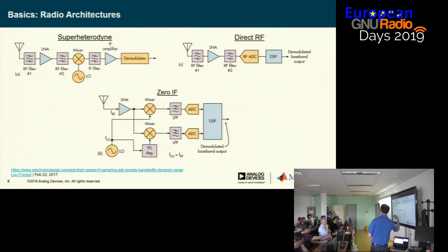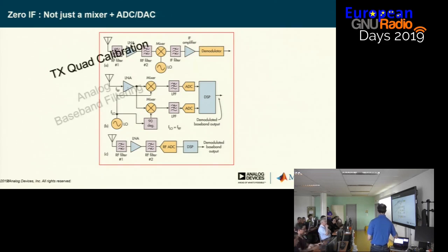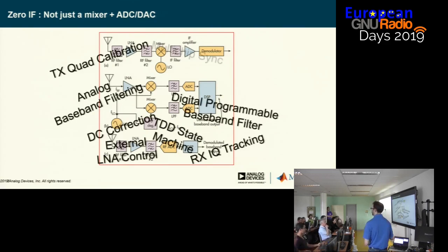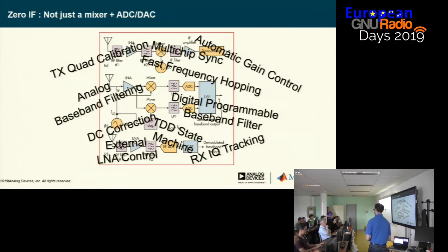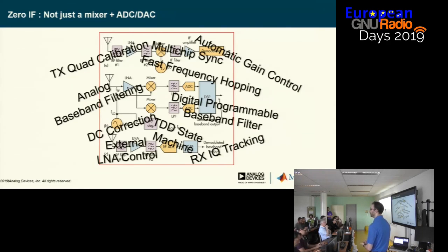These are simplified block diagrams of radios, but what makes them work are things like quadrature calibration, baseband filtering, DC correction, integrated LNAs, and programmable baseband filters. There are a lot of moving pieces inside the transceivers which makes them super flexible but also really complicated to use. Over the past 5-10 years we've tried to simplify this with different layers of software that abstract a lot of the complexity away.